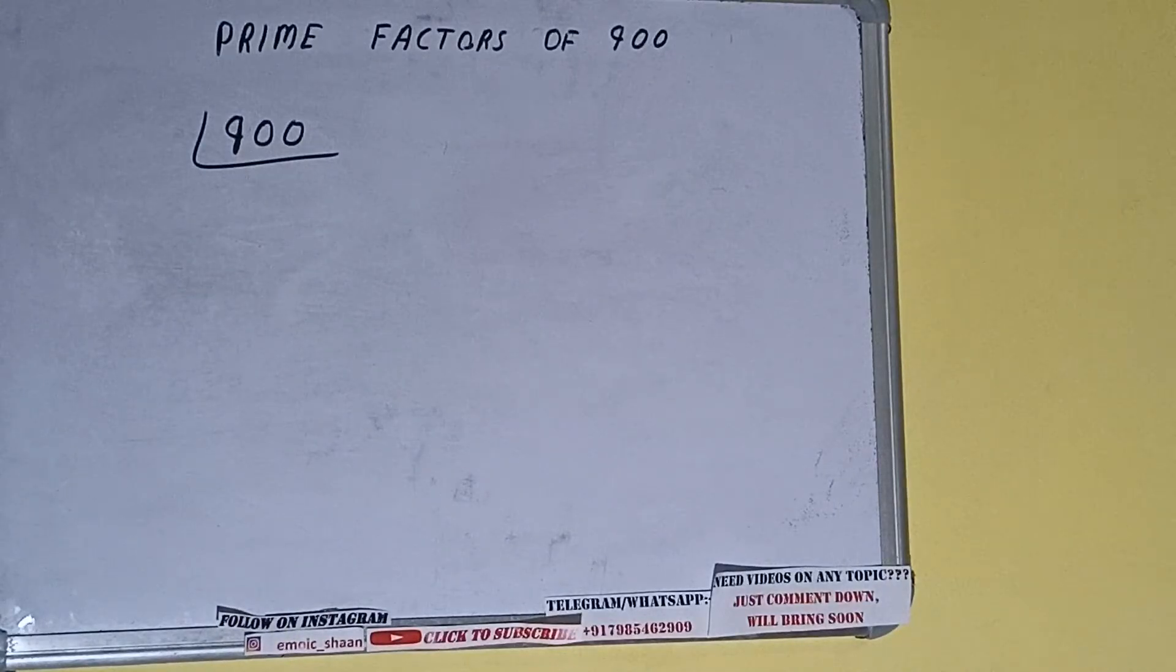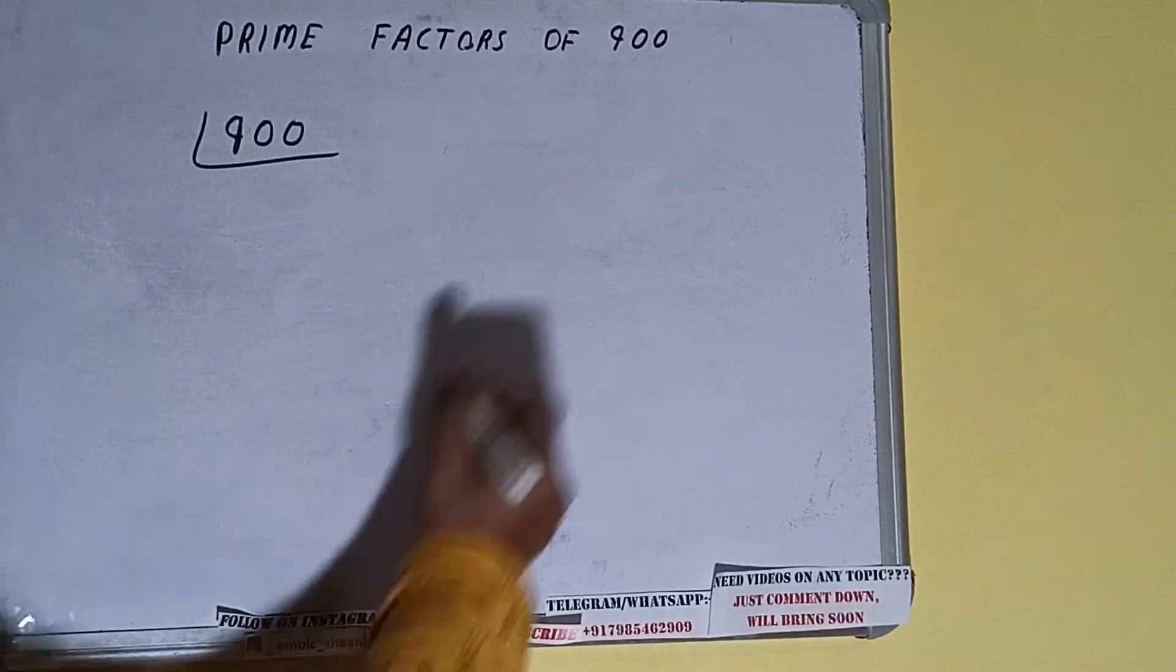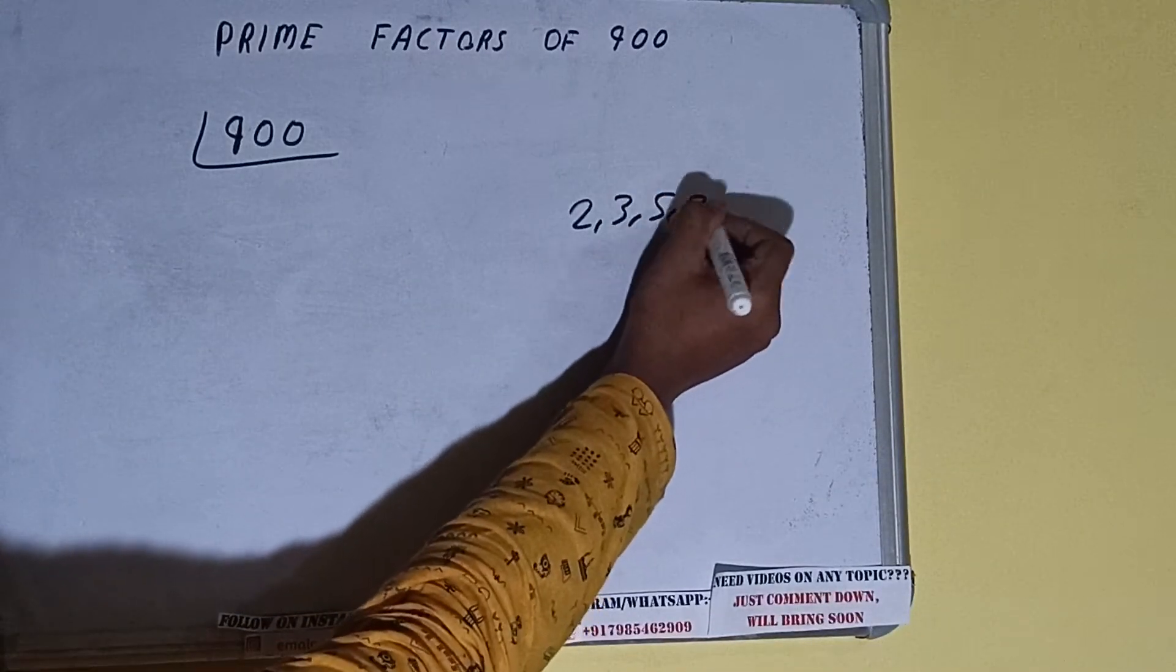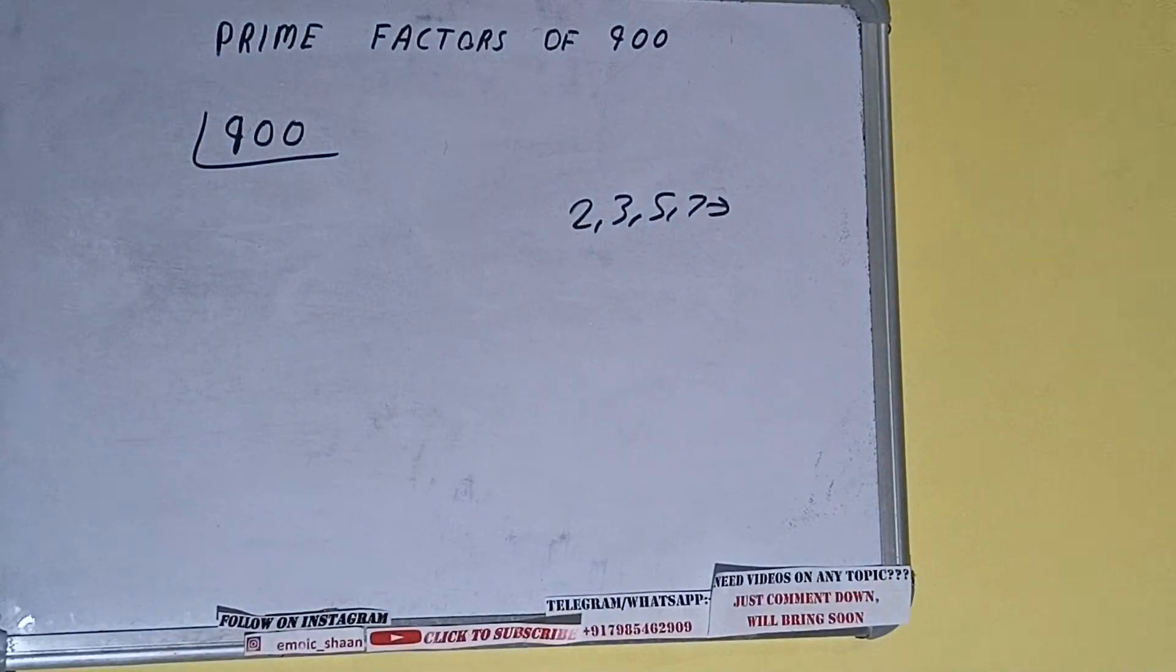The next thing we need to know about is what are prime numbers. So prime numbers are numbers that are divisible by 1 and the number itself, like 2, 3, 5, 7, and so on. Alright.